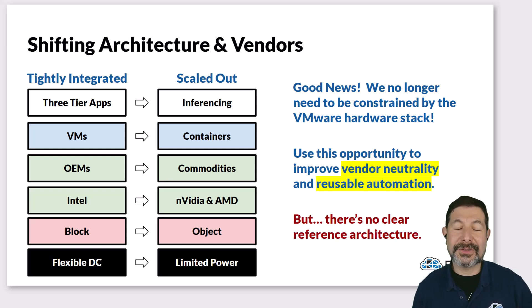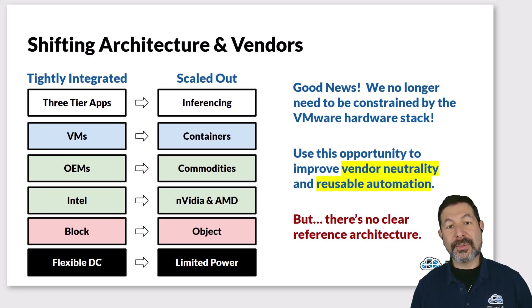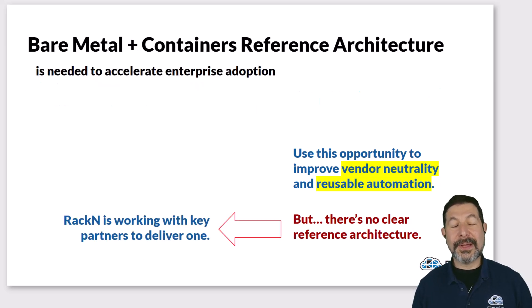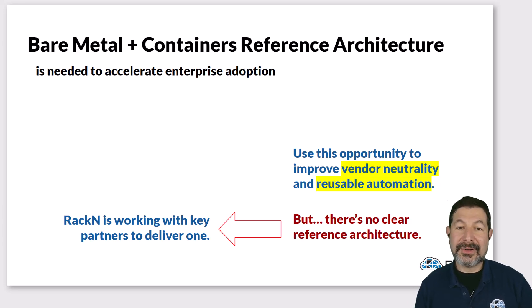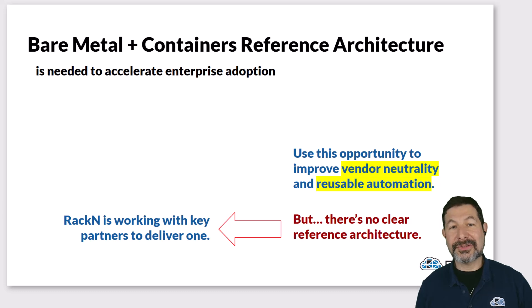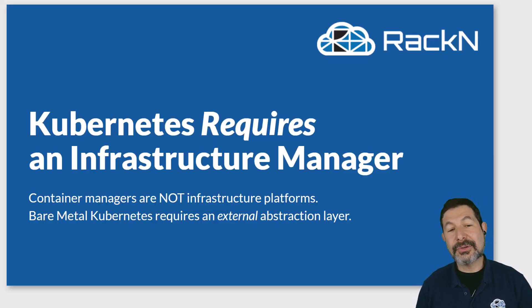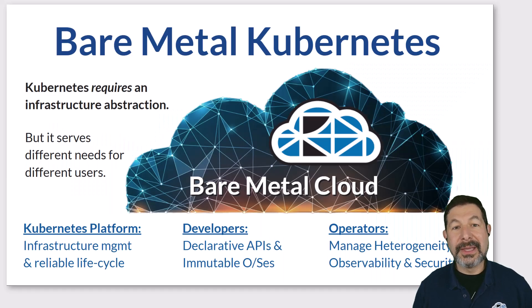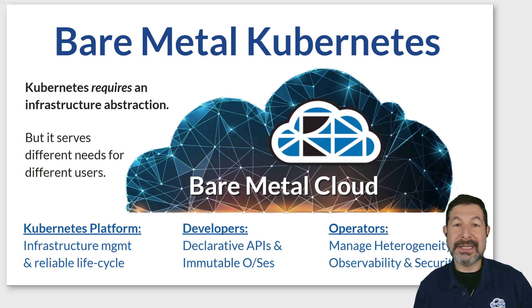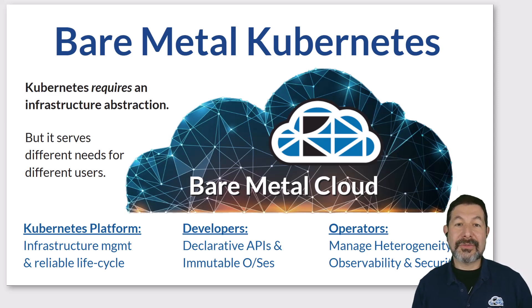What's holding us back is that there is no clear reference architecture. This is something we are working on very aggressively to help customers move more quickly — building that bare metal and container reference architecture using systems like OpenShift, where enterprises have a high degree of confidence in the vendor but don't yet know what to build or buy. We address those questions because Kubernetes fundamentally requires an infrastructure manager. It is a container platform, not an infrastructure platform. Looking at a bare metal Kubernetes story, especially one driving virtual machines, a bare metal cloud can really drive multiple use cases across the system.